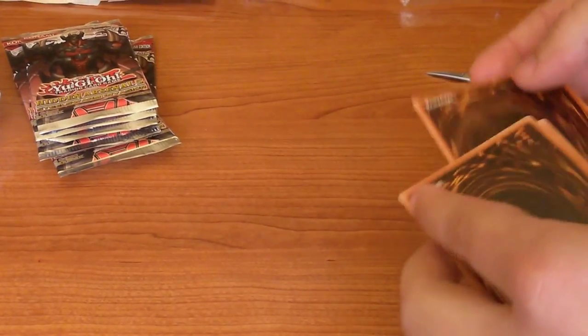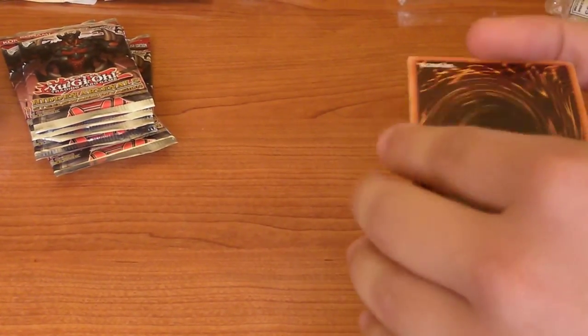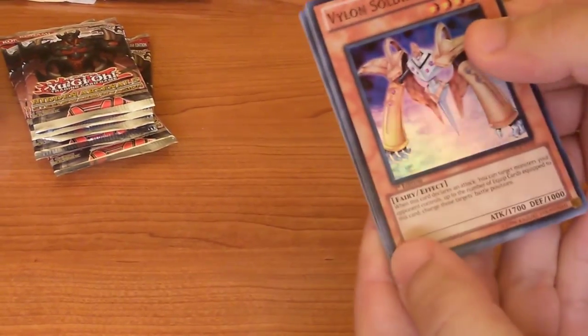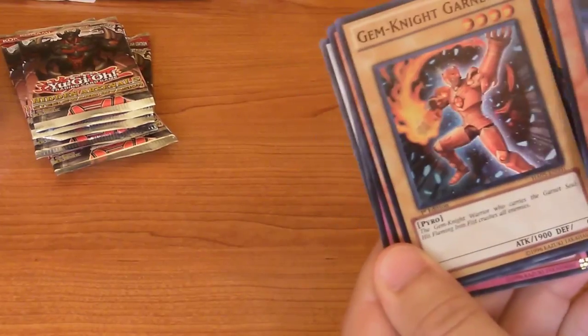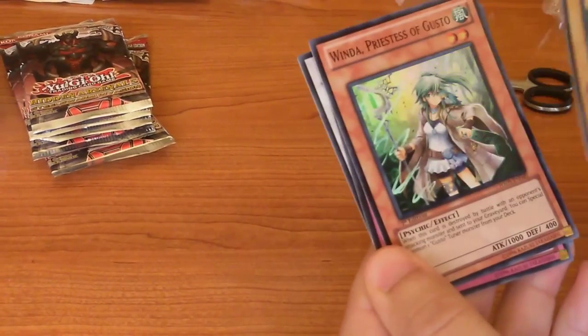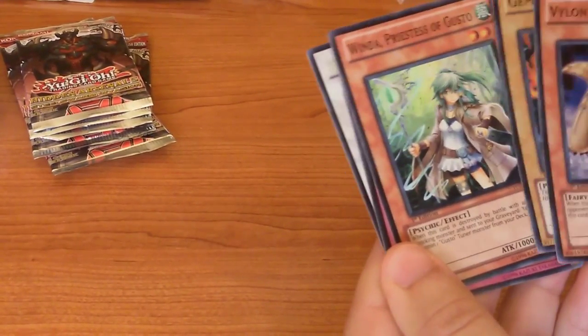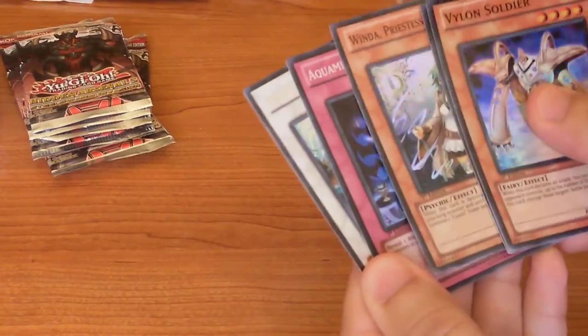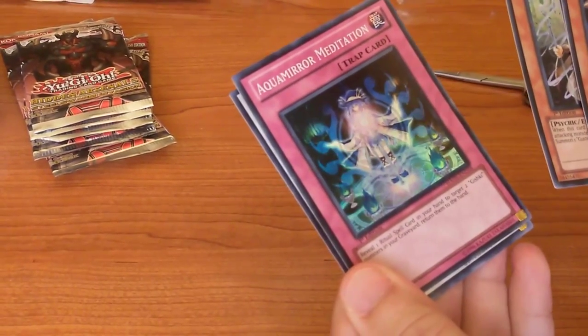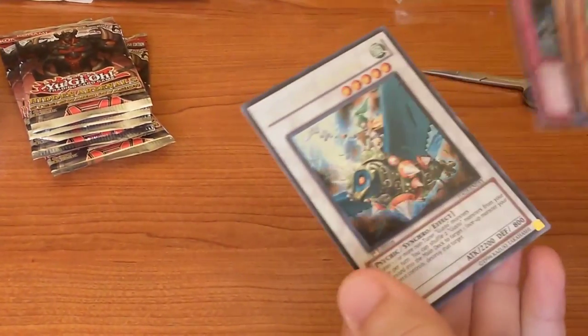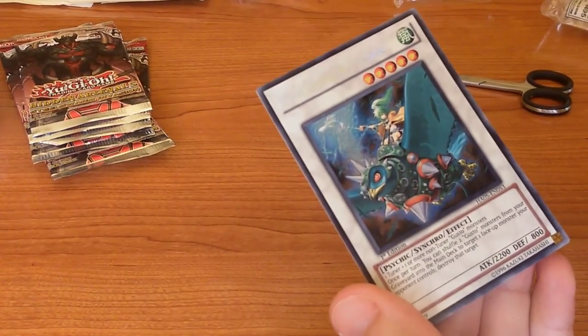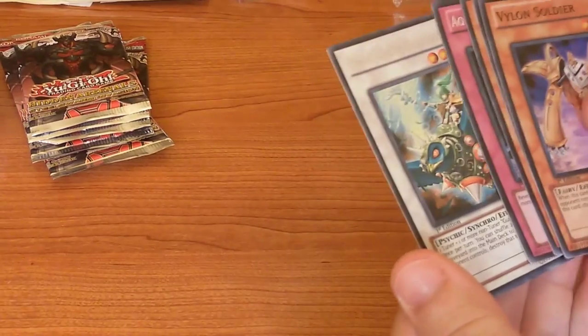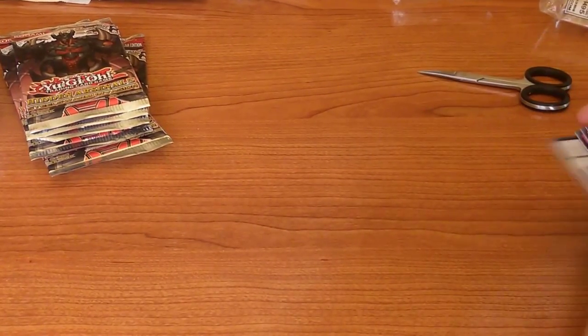I'm going to put the first last because that's the secret rare. Violent Soldier, Gem Knight Garnet, Winda Priestess of Gusto, Aquamirror Meditation, nice, and Digusto Guldos. Oh nice, a synchro. Okay, cool.